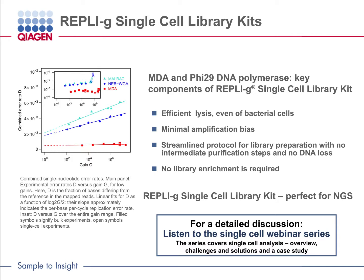The library preparation protocol is a simple, one-tube procedure that reduces the risk of losing DNA in the intermediate steps, resulting in high yields of superior quality libraries that do not need further PCR enrichment steps. Overall, the combination of MDA technology and Phi29 polymerase in the RepliG single-cell library kit enables you to prepare sequencing libraries with high fidelity and accuracy, while retaining the sample genomic diversity in about 5 and a half hours.